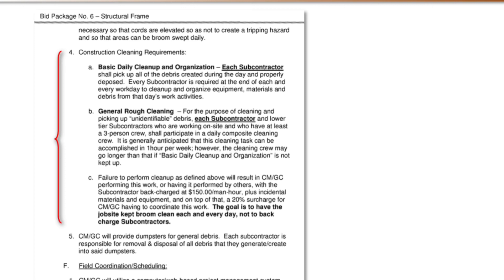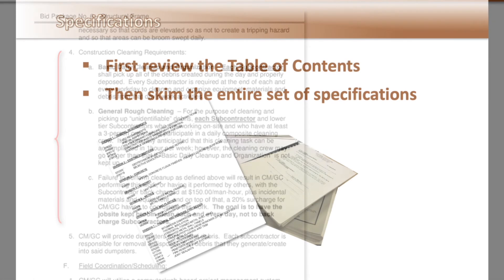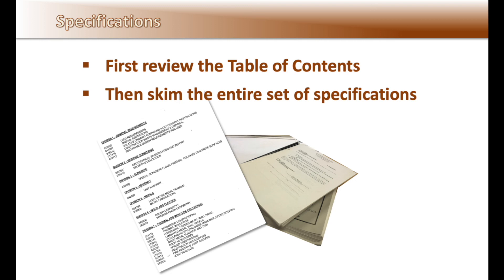We have covered just a very few examples — we could spend an entire day discussing specifications alone. Finding information in specifications can sometimes be difficult. First, review the table of contents. If you are new to this, it wouldn't be a bad idea to skim or read the entire set of specifications — yes, page by page — and look for those nuggets of information that might affect your bid and impact the construction of the work. The owner, architect, engineer, and all the inspectors will be reading them, and they will hold you to every letter of the word.